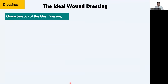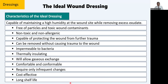What is an ideal dressing? They list many characteristics, and as of today, no single dressing meets all of them. The most important properties are: humidity, moisture balance, no toxic particles, protection from trauma during application and removal, impermeability to bacteria, temperature maintenance, air permeability, comfort and conformability to joints, infrequent change requirement, cost-effectiveness, and long shelf life. Many modern dressings tick most boxes except cost-effectiveness.